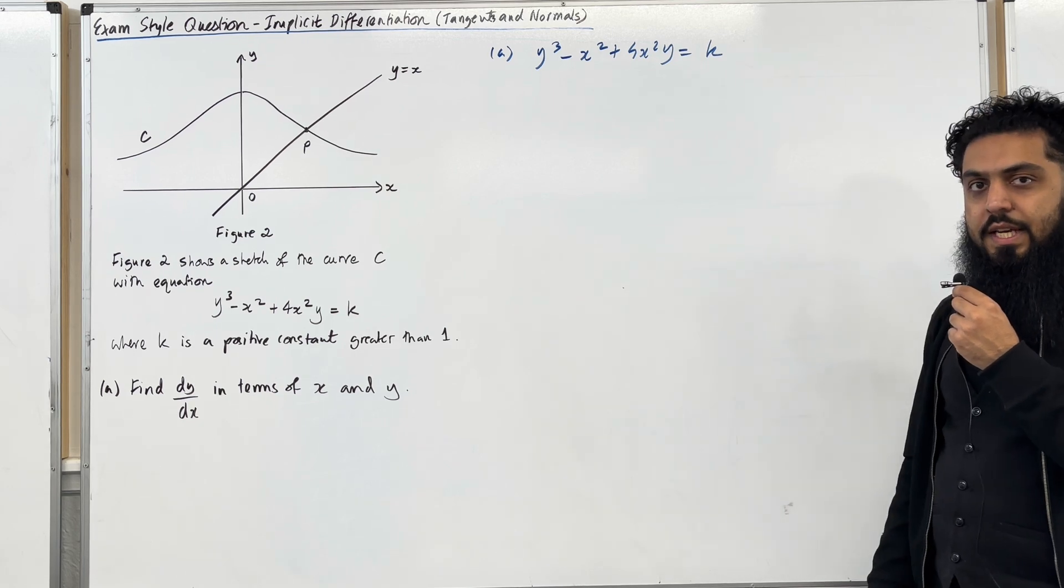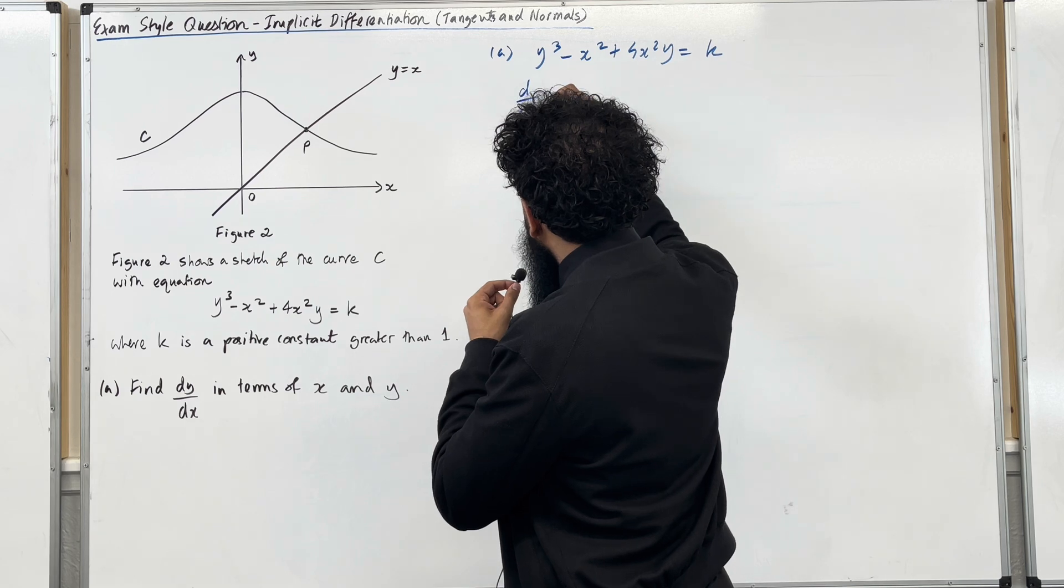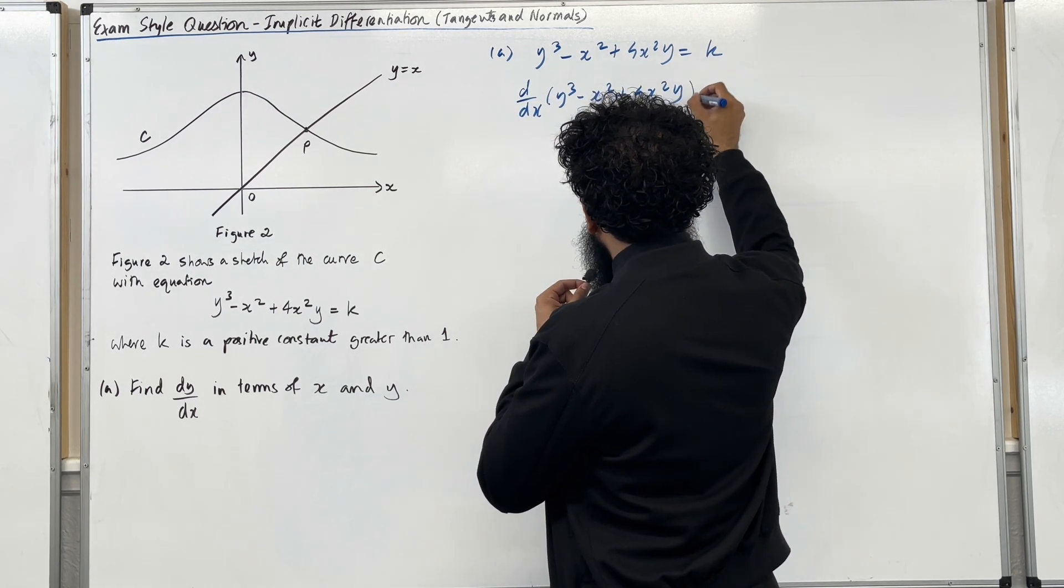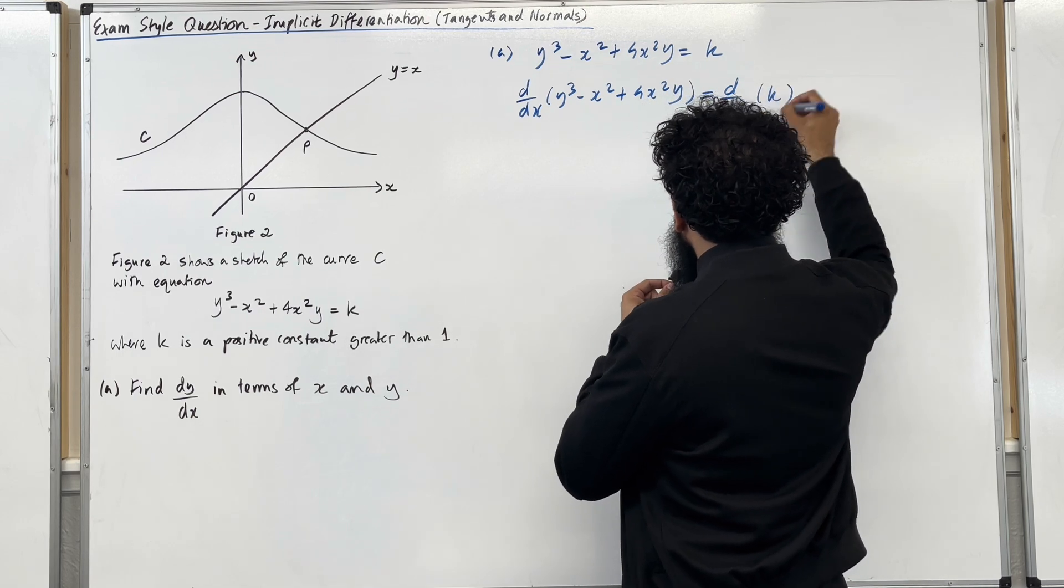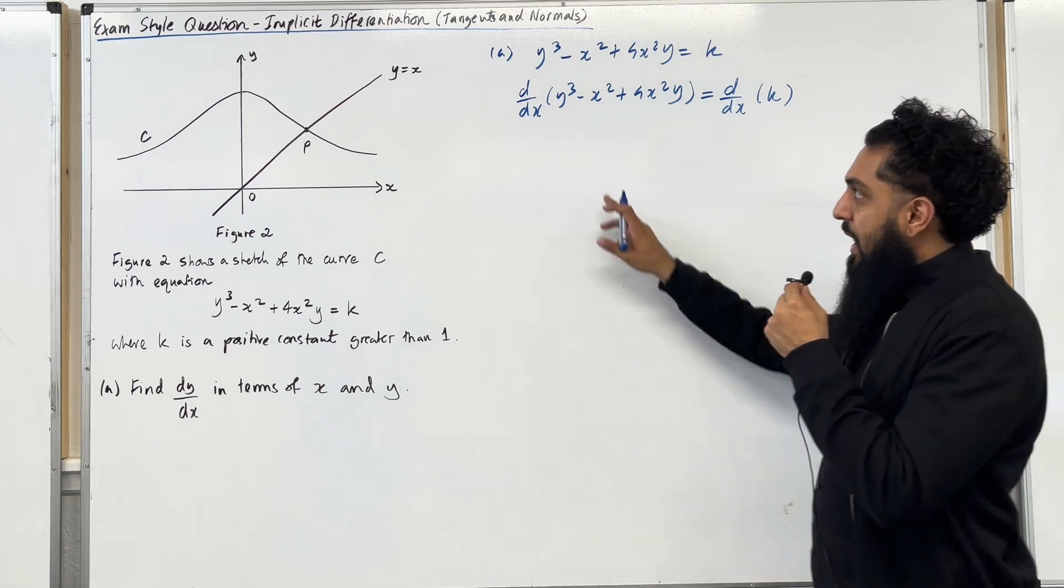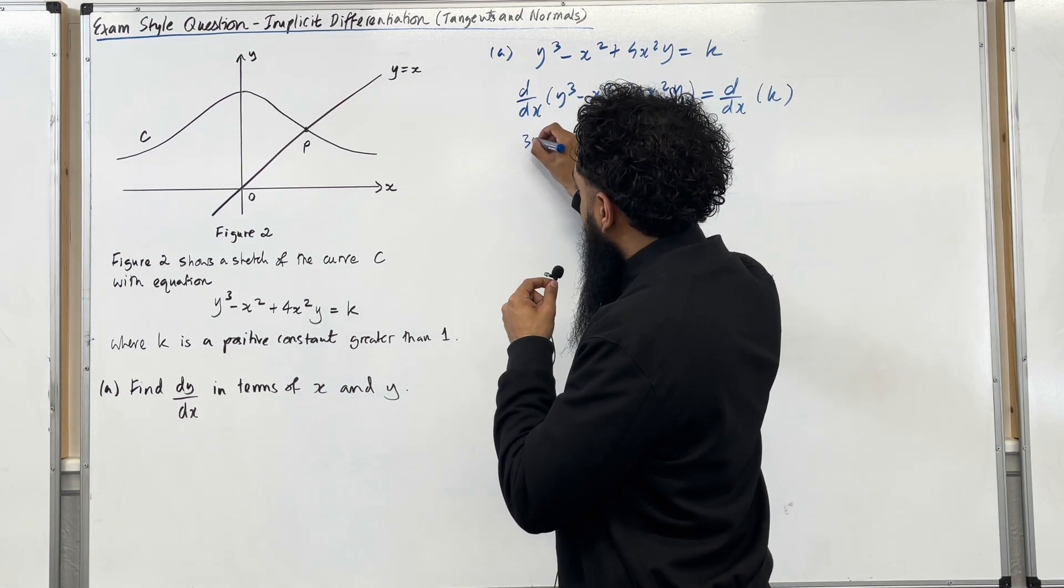Firstly I'm going to apply d over dx on both sides. So I've got d over dx of y cubed minus x squared plus 4x squared y equal d over dx of k. Now I'm going to use term by term differentiation. Let's begin with the first term. y cubed differentiates to 3y squared.